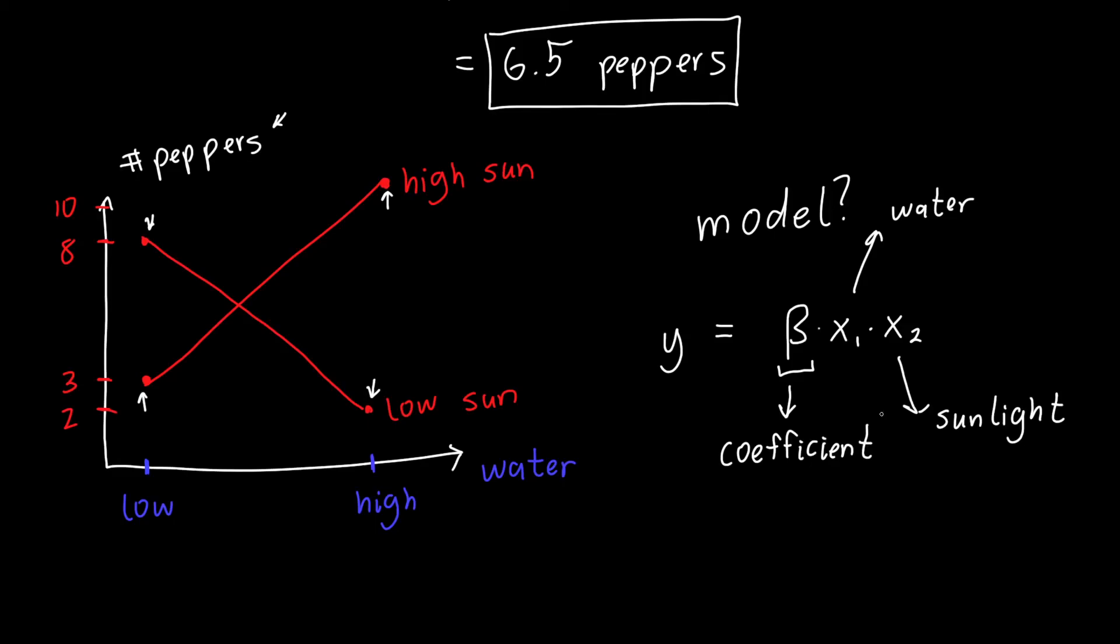And usually this beta will be one of many coefficients in a linear model or a nonlinear model even. In this case, beta is related to this number that we calculated here, 6.5 peppers. So if X1 takes the value of minus 1 and 1, where minus 1 will mean low and 1 means high, both for water and sunlight, then beta would actually be 3.25 or 6.5 over 2.